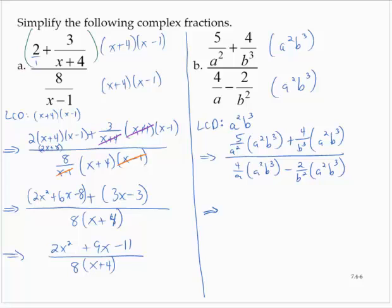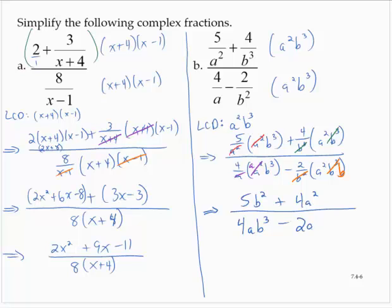Simplifying: in the first term the a² factors reduce, leaving 5b³. In the second term the b³ factors reduce, leaving 4a². So the numerator is 5b³ + 4a². In the denominator, the first term's a's reduce leaving a single factor of a, giving 4ab³. In the last term the b² reduces with the b³ leaving a single factor of b, giving −2a²b. So the denominator is 4ab³ − 2a²b, and we can leave it like that.